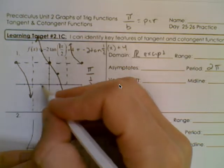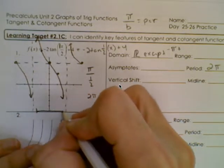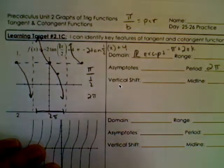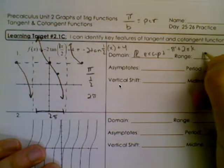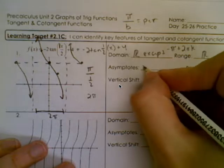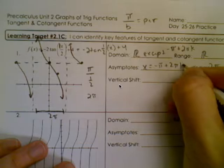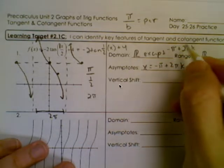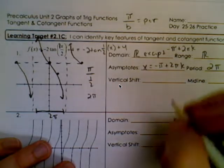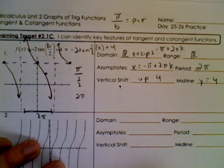The easiest way to find the domain is to find one asymptote — here I have one at negative pi — and then notice the distance between asymptotes is 2 pi apart, so it's going to be plus 2 pi k. The range for tangent and cotangent is always all real numbers. The asymptotes are x equals those excluded values — remember, it's x equals because they are vertical lines. The vertical shift is up 4, which means the midline is at y equals 4, and notice it is an equation.